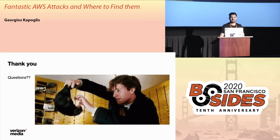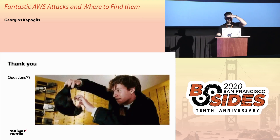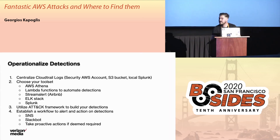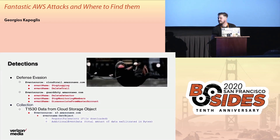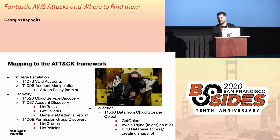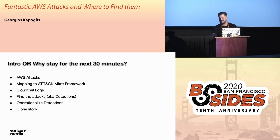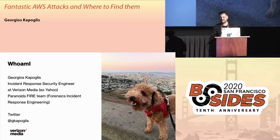Someone asks for the Twitter handle: it's Decapogles — it's on the first slide. Another question: for those thousand accounts, how many engineers help maintain and write all the rules? We have a pretty big team.